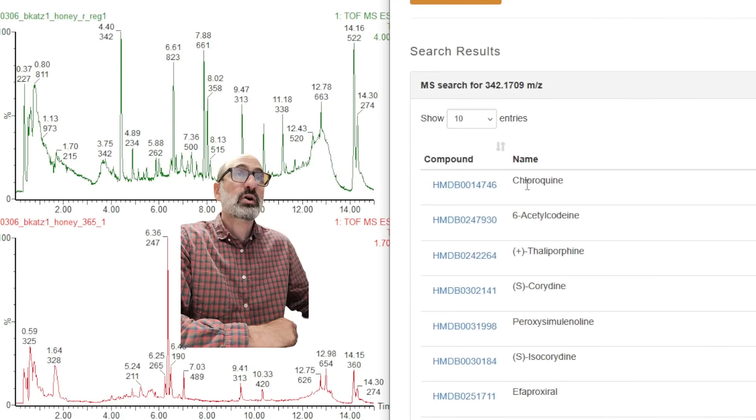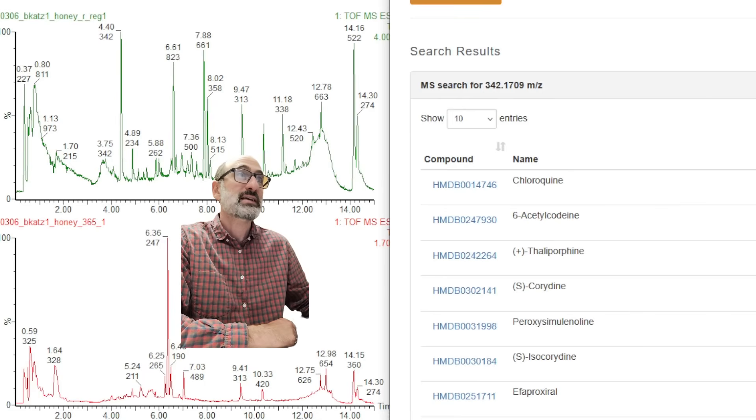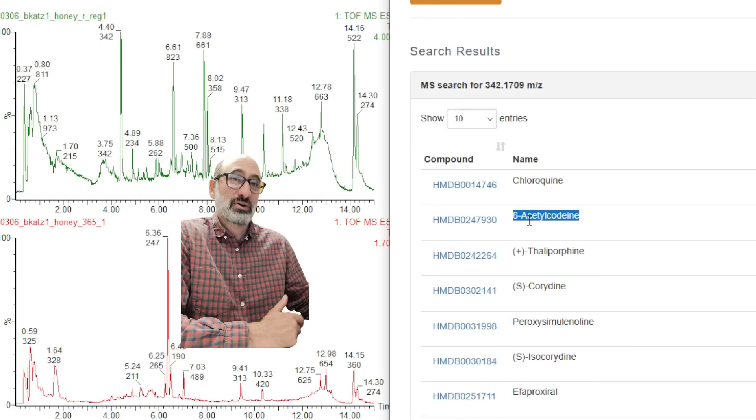Searching it in HMDB, we're getting this chloroquine, which is sodium, but we know the peak from the way it looks. And the mass spectra is not sodium. The next top hit is 6-acetyl-codeine, which would have some effect, noticeable effects.